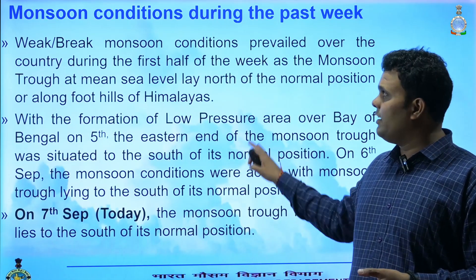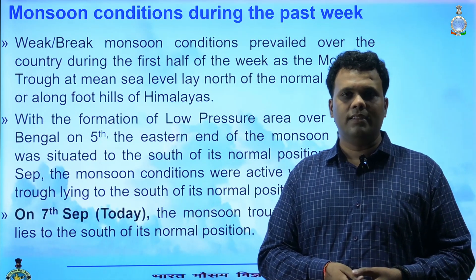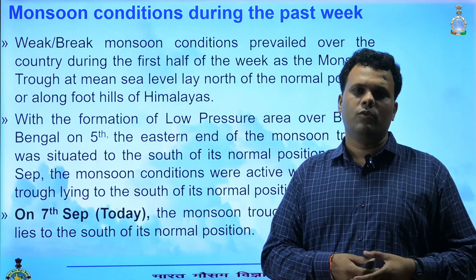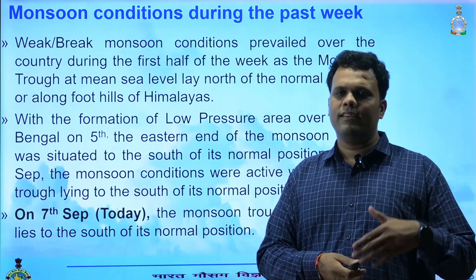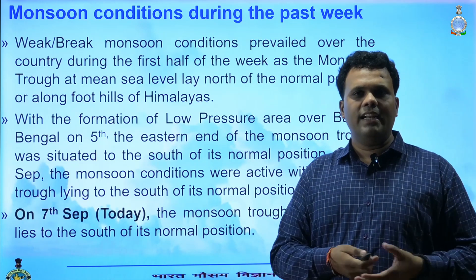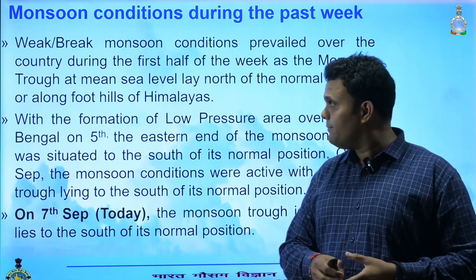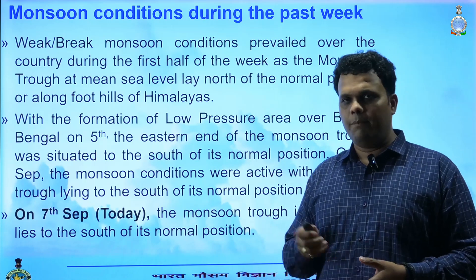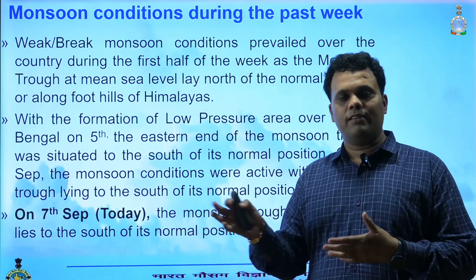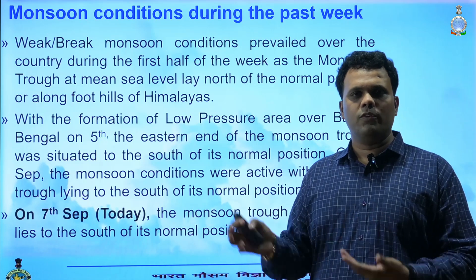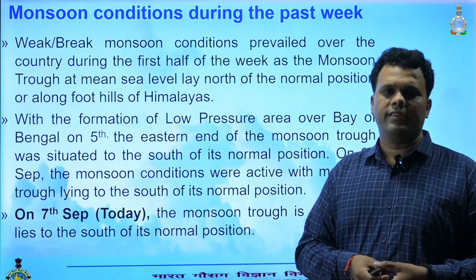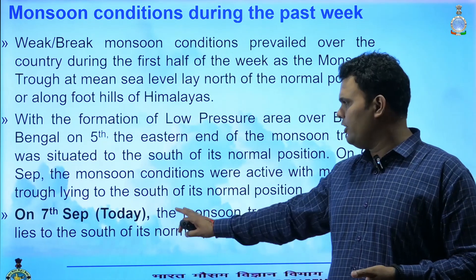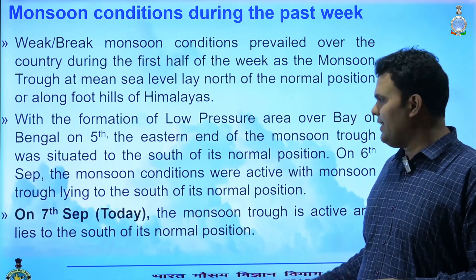If we see the main weather features which impacted India during the past one week, the monsoon trough was lying for the first half of the week towards the northern side of its normal position, that is near the foothills of the Himalayas, and that led to subdued rainfall activity over the country. Around the 5th of September, a low pressure area formed over the Bay of Bengal, and under its influence the eastern part of the monsoon trough started moving towards the southern side of its normal position. On the 6th, the monsoon trough moved to the south of its normal position, placing it in an active situation.